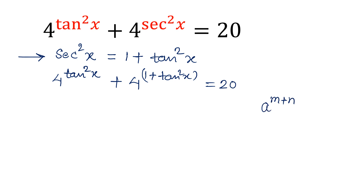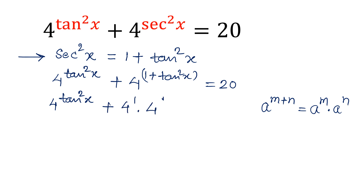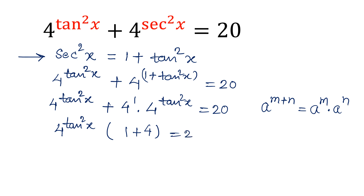By the property of exponents, a^(m+n) = a^m × a^n. Applying this, the equation becomes 4^1 × 4^(tan²x) + 4^(tan²x) = 20. Taking 4^(tan²x) as common, we get 4^(tan²x) × (4 + 1) = 20.